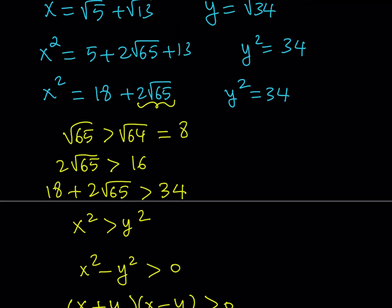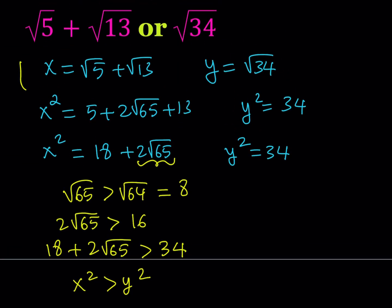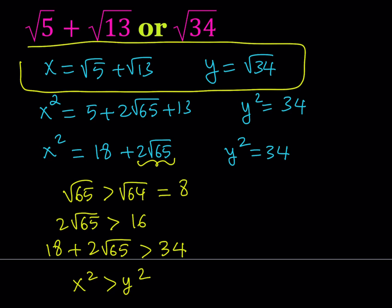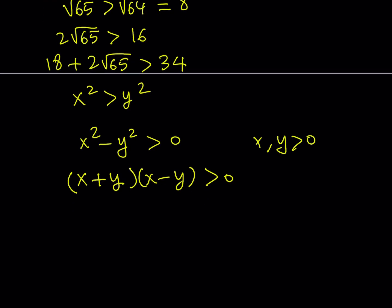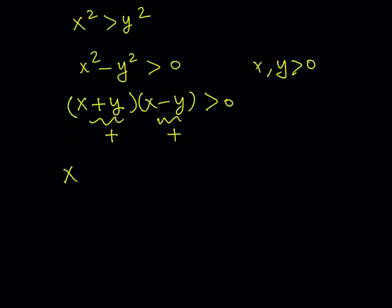One thing to notice is that x and y are both positive. Since x and y are both positive, we know that their sum is also going to be positive — so (x plus y) is a positive quantity. It's multiplied by (x minus y), which gives us a positive result overall. So x minus y also needs to be a positive quantity, meaning x minus y is greater than 0.